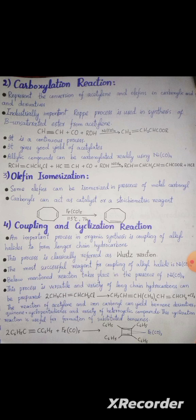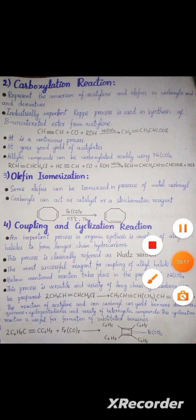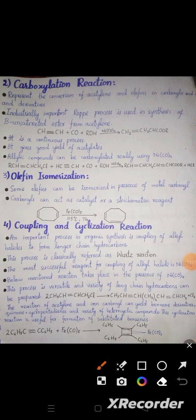A stoichiometric reagent is a reactant in a chemical reaction that is consumed during the reaction. Next, coupling and cyclization reactions: an important process in organic synthesis is the coupling of alkyl halides to form longer chain hydrocarbons. This process is classically known as the Ullmann reaction. The most successful reagent for coupling of alkyl halides is nickel carbonyl, and a variety of long chain hydrocarbons can be prepared.